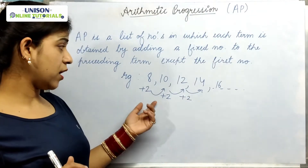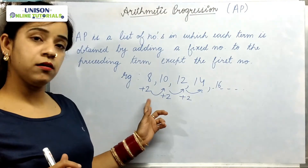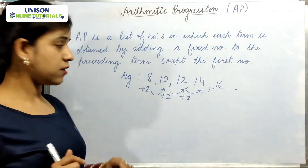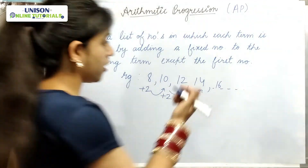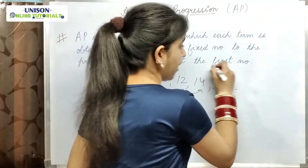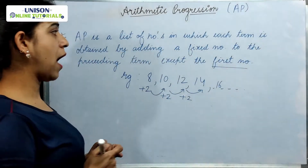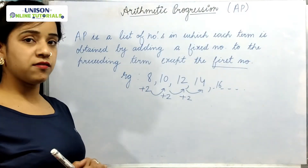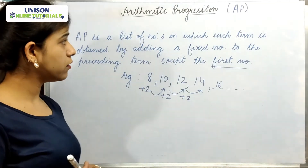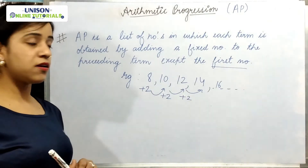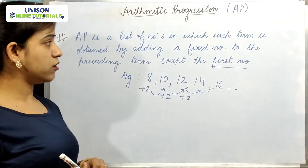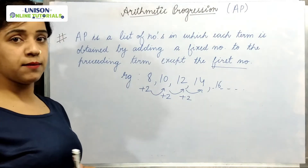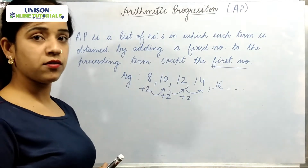Here in this case, we are adding 2 to every preceding number and we get the successive numbers. AP is a list of numbers in which each term is obtained by adding a fixed number to the preceding term, except the first term.